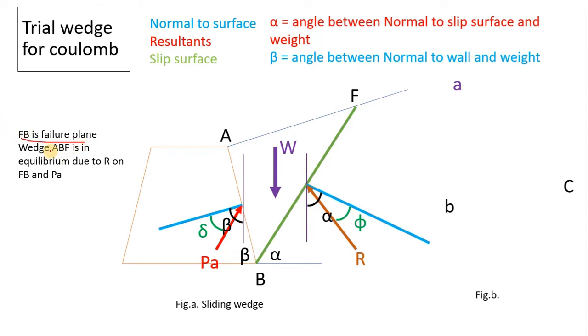FB is the failure plane in the wedge ABF, and it is in equilibrium due to PA and R. We have already seen this figure in Coulomb's earth pressure theory. Now draw a line parallel to the weight, draw force triangle. Red represents active earth pressure, and this represents reaction on the failure plane.